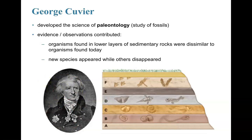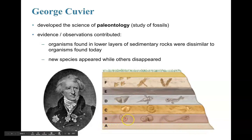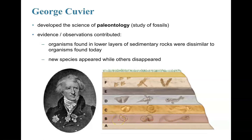Cuvier discovered that organisms found in lower layers of earth are more dissimilar to current life. For example, looking at different layers — in layer B there are some fossils trapped within it. The fossils in layer B are more dissimilar compared to fossils found in more superficial layers. The fossils in layer D are going to be more related to the organisms that exist today.